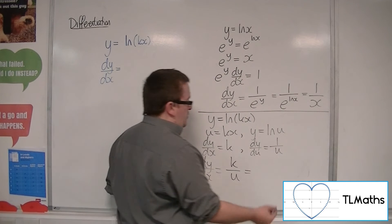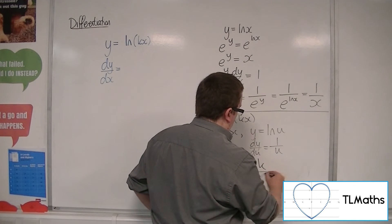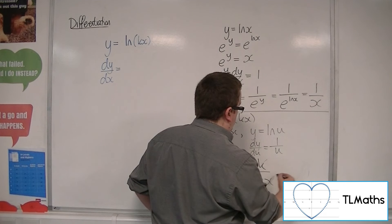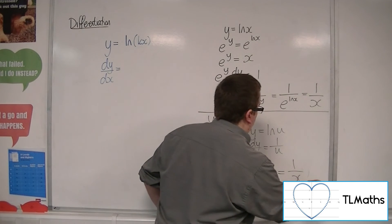But remember, u was just kx. So the k's just cancel, and I get left with 1 over x.